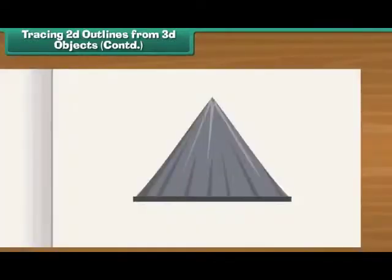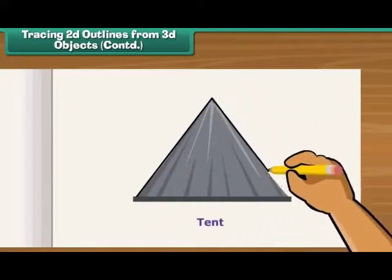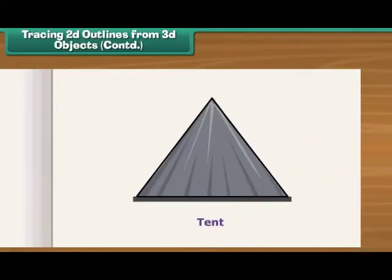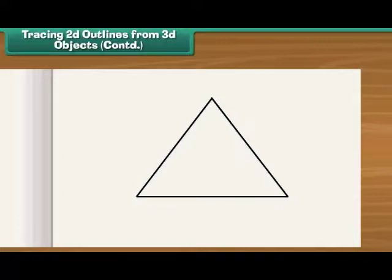Place a miniature tent on a sheet of paper. Draw a line along its outer edge. Remove the tent. You can see a triangle on the sheet.